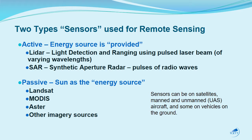There are two types of sensors used for remote sensing. One is active — the energy source is provided by the sensor itself. LiDAR and SAR are two types of active sensors: one uses laser beams and the other uses radio waves to strike the object and collect the return signal. Passive sensors use energy from the Sun. Landsat, MODIS, Aster, and many other imagery sources use the Sun as the energy source. These sensors can be on satellites, on manned and unmanned aircraft, increasingly on drones, and even on ground vehicles.